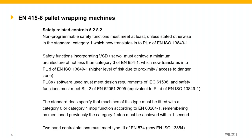Section 5.2.3.1.8 covers emergency stops: e-stop actuators must be spaced no more than five metres apart. EN 415-6 was written before EN 13849 came into effect, so not all parts have been harmonized — these still reference EN 954-1. Non-programmable safety functions must meet at least category 1, now translating to performance level c under EN 13849. Safety functions incorporating drives or servos must achieve at least category 3, which is now performance level d. PLCs and software must meet IEC 61508 design requirements, and safety functions must meet SIL 2 of EN 62061, equivalent to PLd under EN 13849.